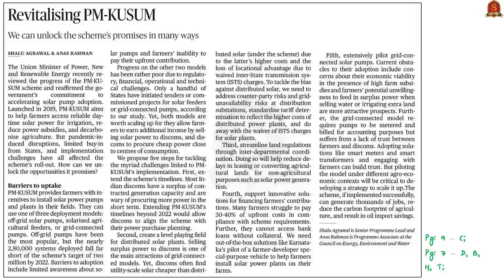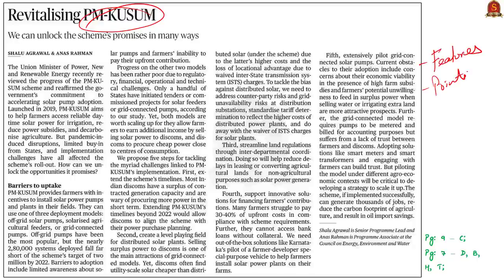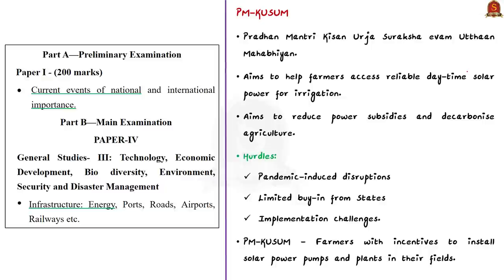Next, we discuss the PM KUSUM scheme. The Union Minister of Power and Renewable Energy recently reviewed its progress and reaffirmed the government's commitment to accelerating solar pump adoption. PM KUSUM stands for Pradhan Mantri Kisan Urja Suraksha evam Uttam Mahabhiyan, launched in 2019. The scheme aims to help farmers access reliable daytime solar power for irrigation, reduce power subsidies, and decarbonize agriculture.